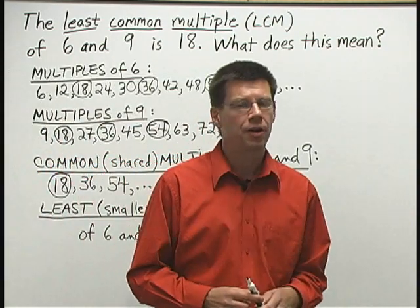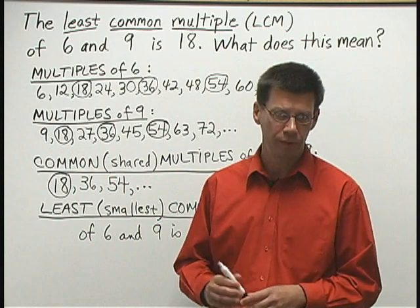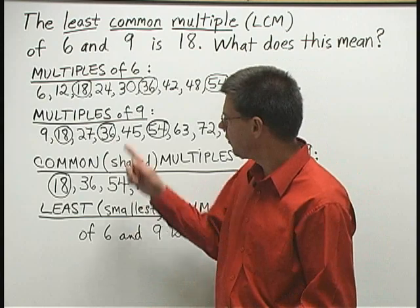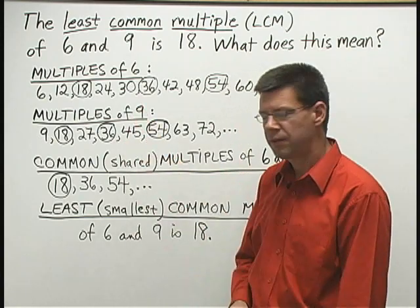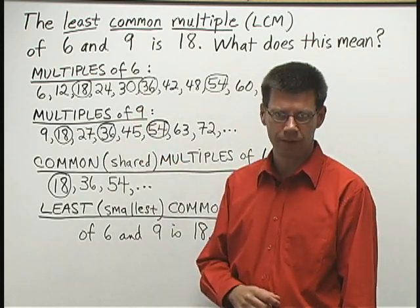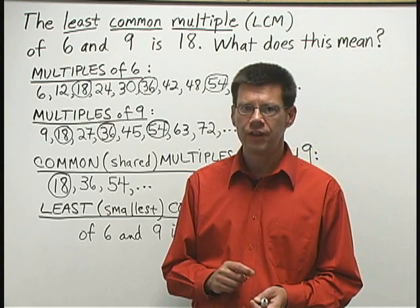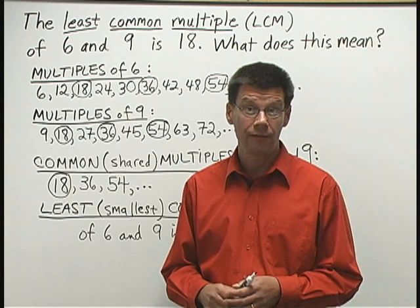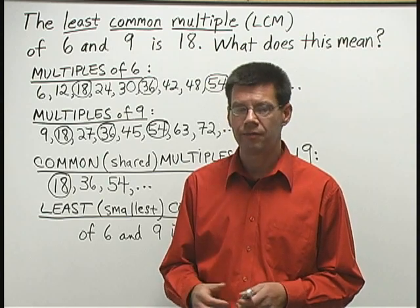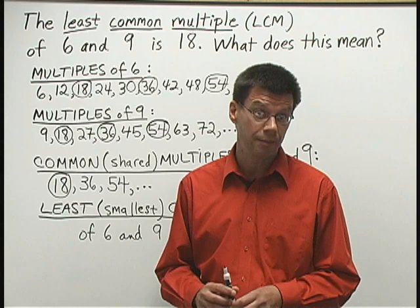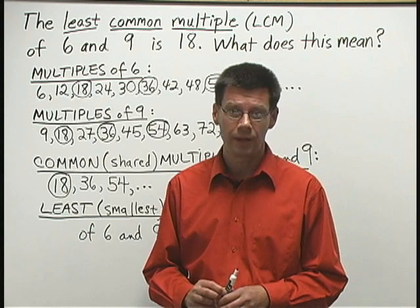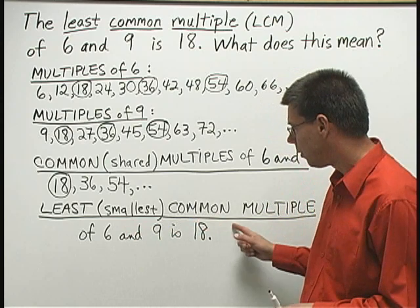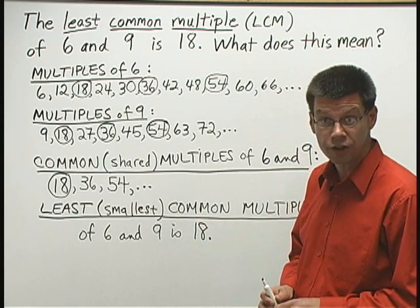So we've been talking about least common multiple. We've been talking about the meaning of least common multiple. And most of our discussion involved thinking of multiplication. Multiplication and division are very closely related in math. Often, when we can make a statement involving multiplication, there's a similar statement involving division. There is a way to think of the least common multiple of a group of numbers using division.